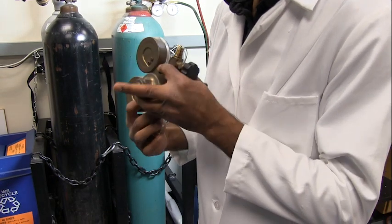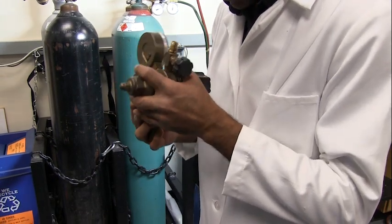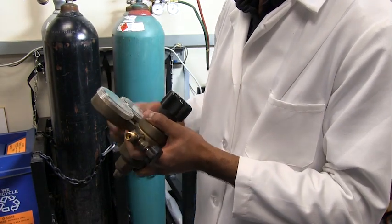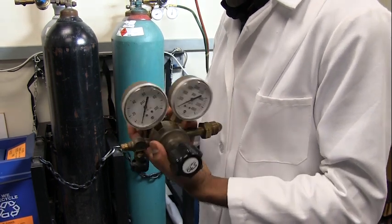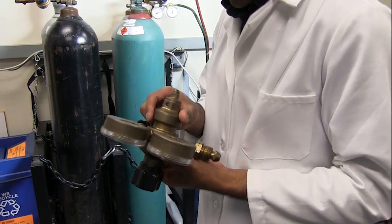Inspect the regulator and gauges for damage and debris. Look for defects that may allow a leak at the connections. Do not connect parts that appear to be damaged. Remove any debris with a clean, dry cloth.